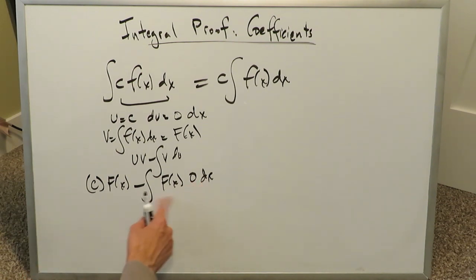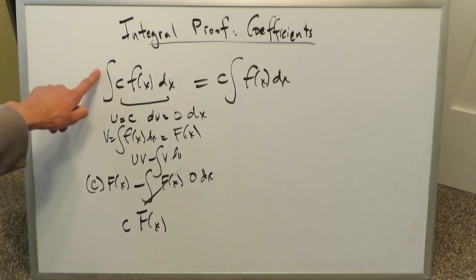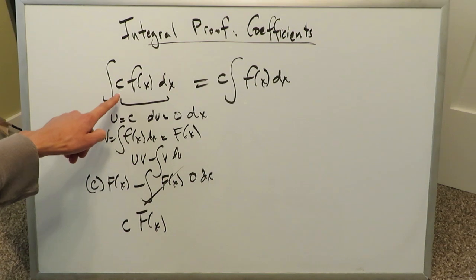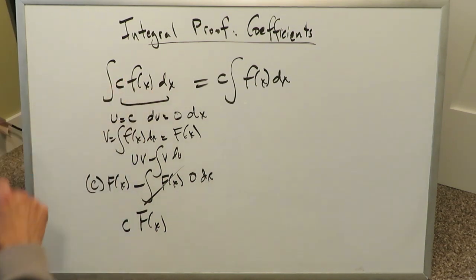This zero dx zeros out everything. You end up getting c, the constant, times that. And that ends up being your end result for this procedure when you're looking at the constant within and part of your integrand.